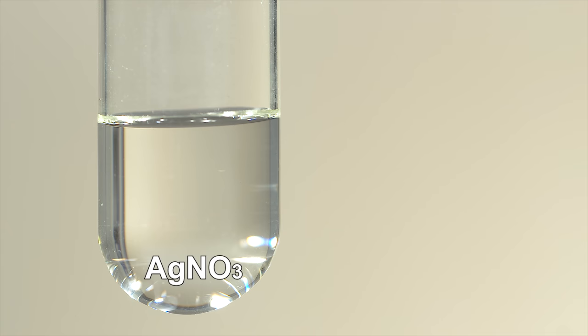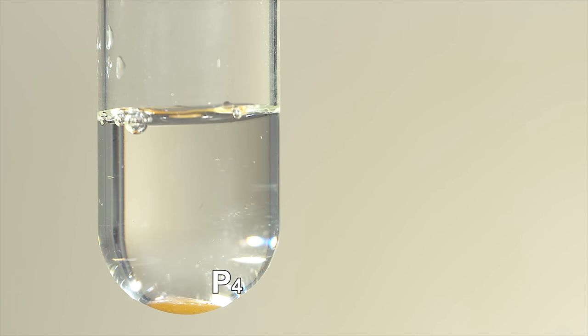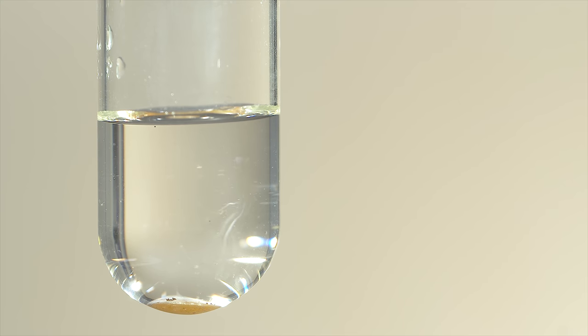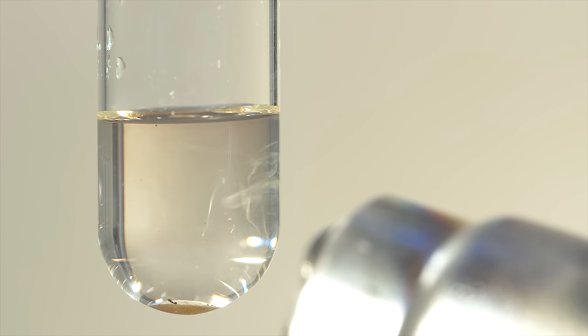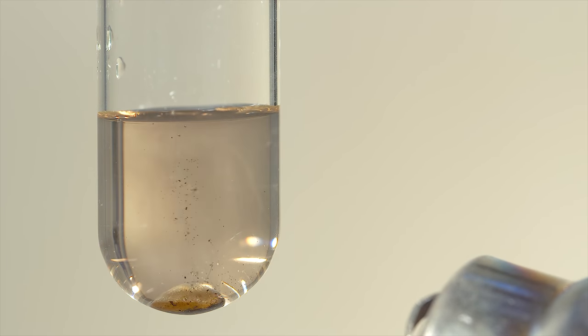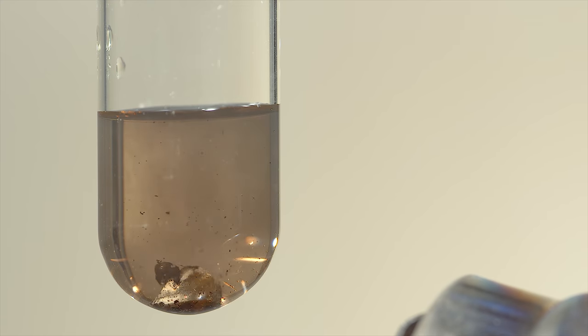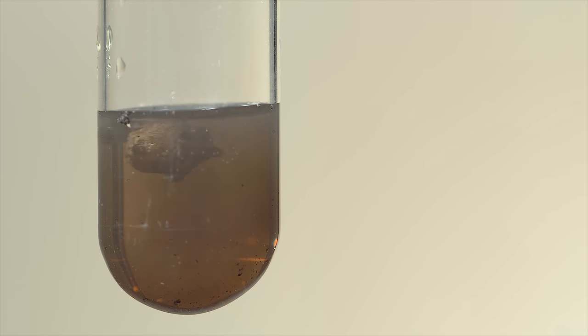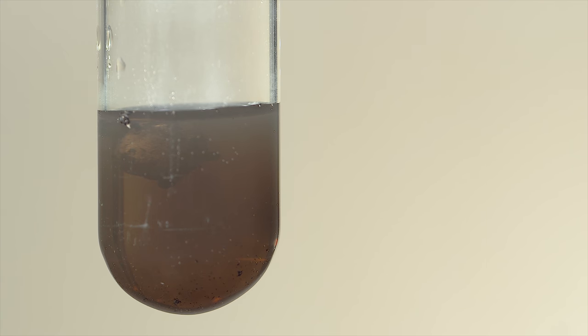White phosphorus can be decontaminated by a silver nitrate solution or a copper sulfate solution. The reaction with a silver nitrate solution causes the formation of silver on the surface of white phosphorus. It prevents white phosphorus from being oxidized by air.